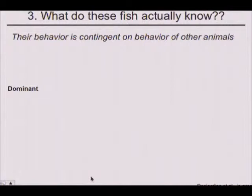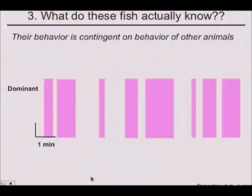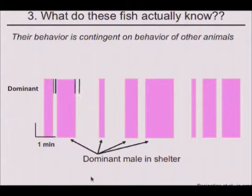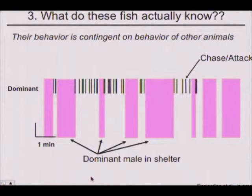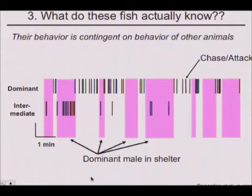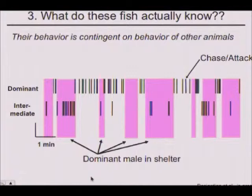What do they actually know? They are a little bit like kindergartners, and their behavior is contingent on other animals — seen in primates, and this is one of the first examples in a fish. This is the dominant male, and when he's in his shelter, he's coming out and attacking other males regularly. Males that are intermediate — the ones who are on the make — only come out when he can't see them because he's in his shelter. A bit like kindergarten playgrounds or faculty meetings, there's an attention hierarchy where animals keep track of who's watching you, and they do this in real time with a cross-correlation of about 0.5 seconds.